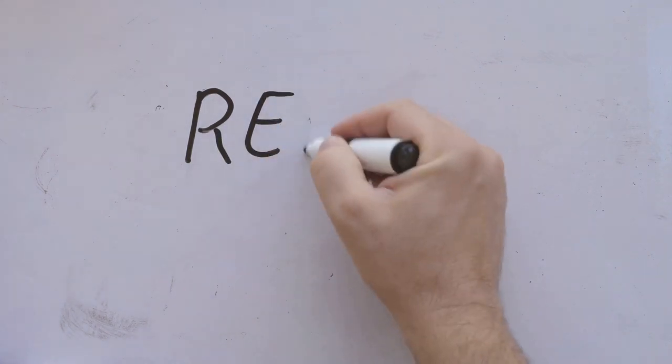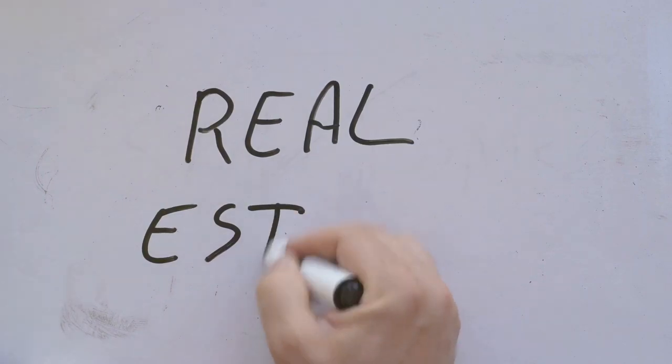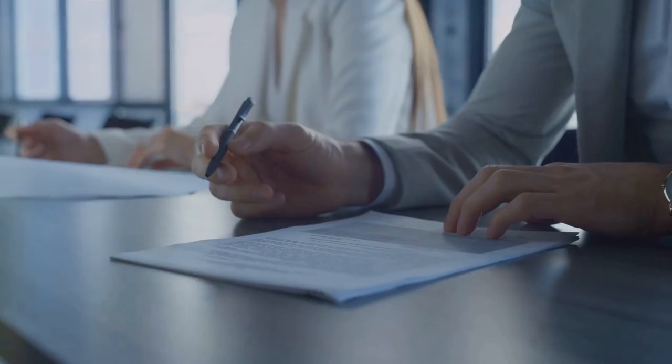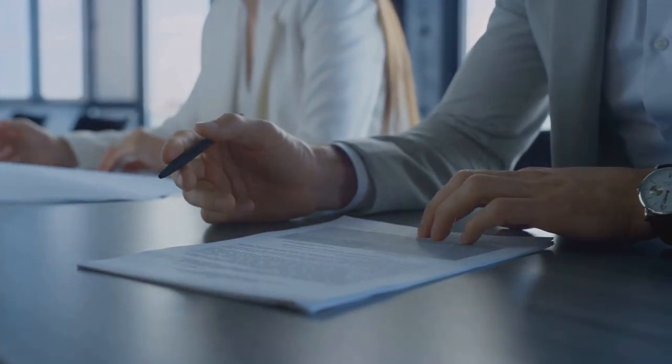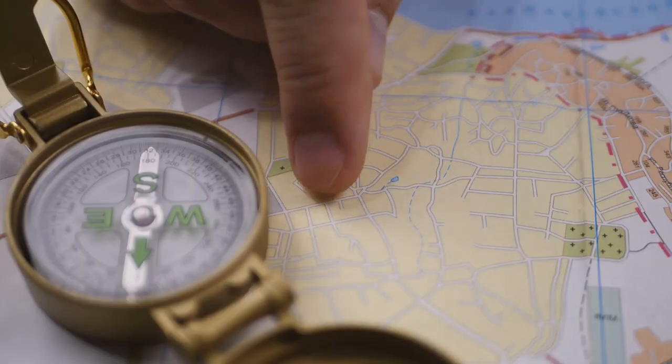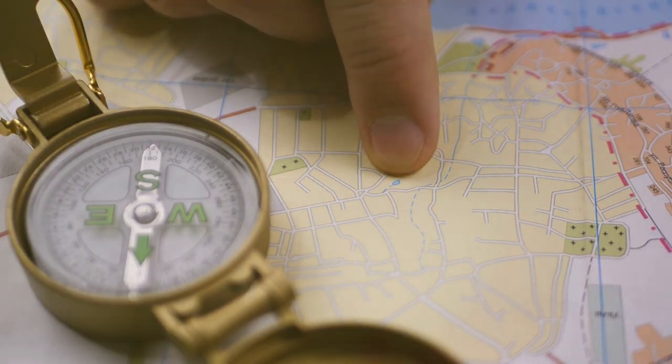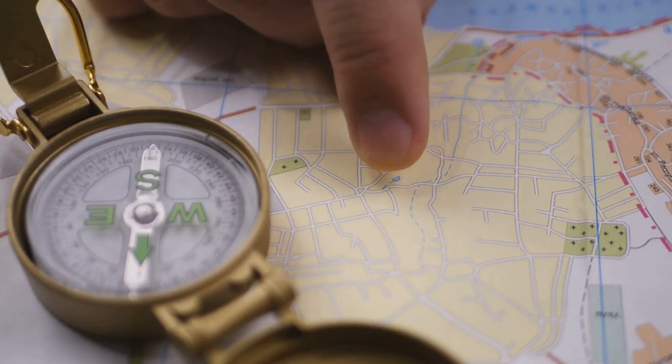The stakes are high and the rules of the game are defined by these documents. Understanding these documents means understanding your rights and responsibilities as a participant in a real estate transaction. It's about knowing what you're agreeing to, what's expected of you, and what you can expect from others. These documents are like a compass guiding you through the property market, helping you avoid pitfalls and reach your destination safely.